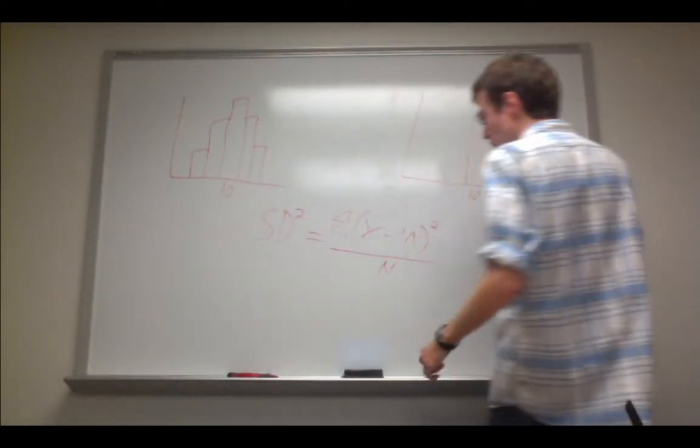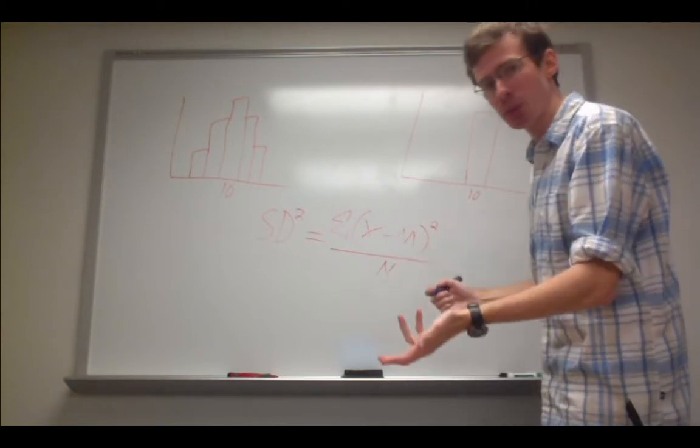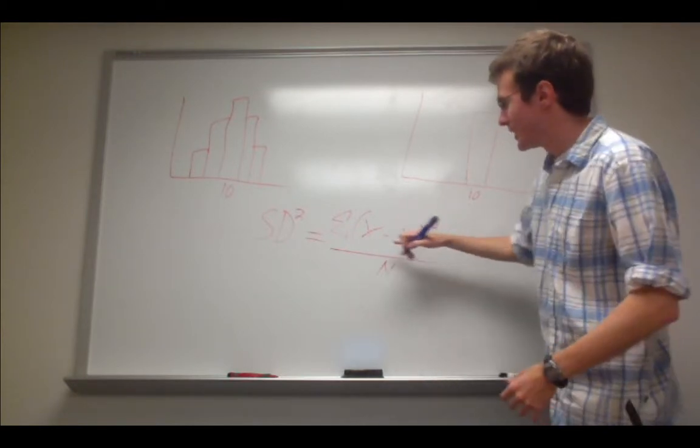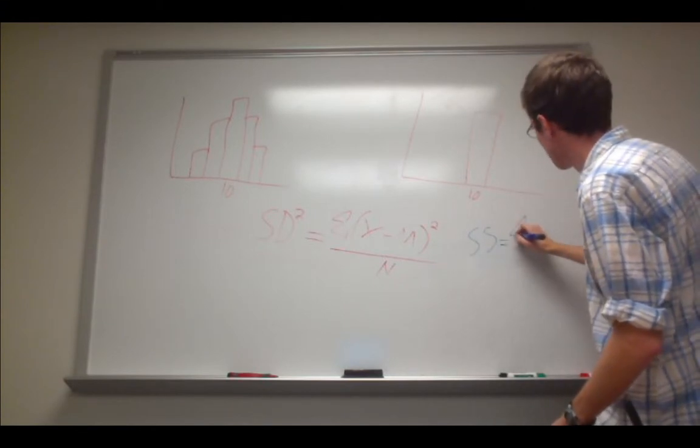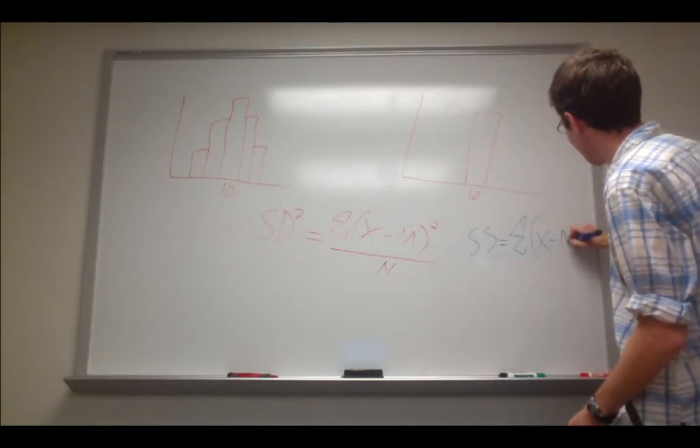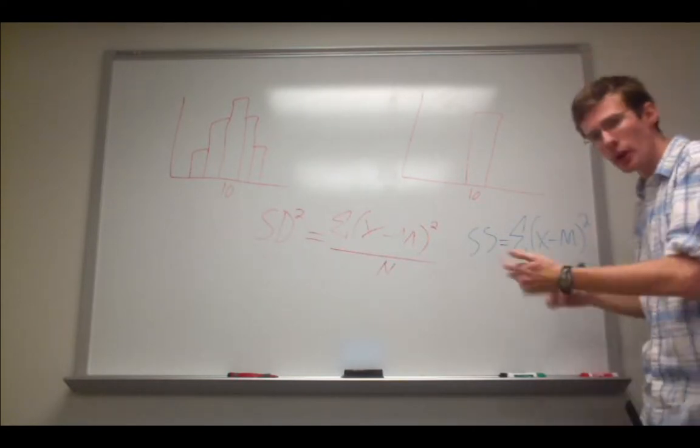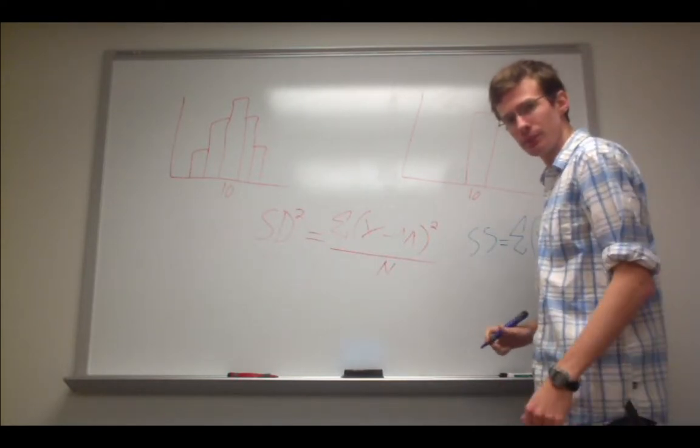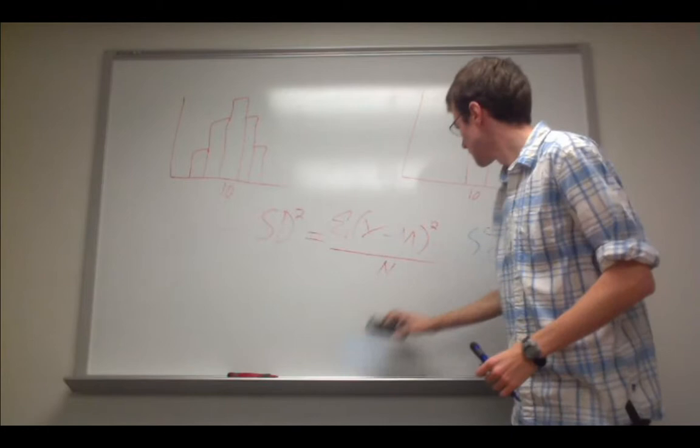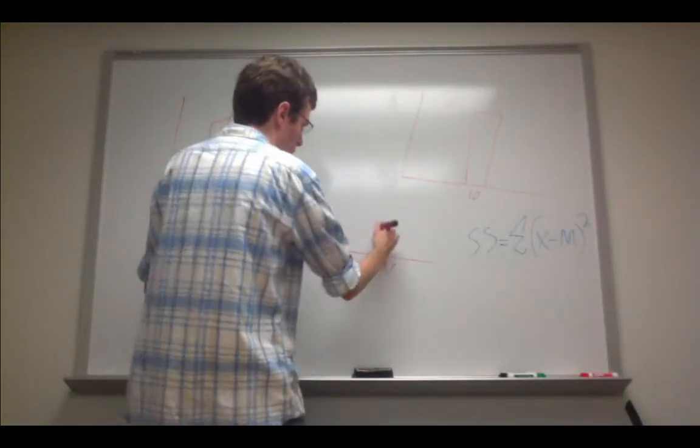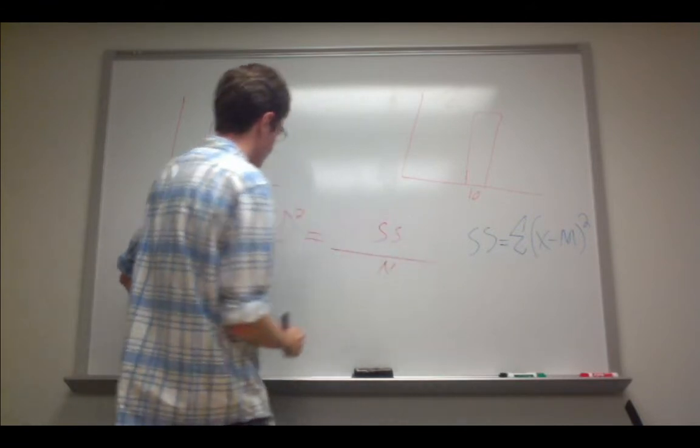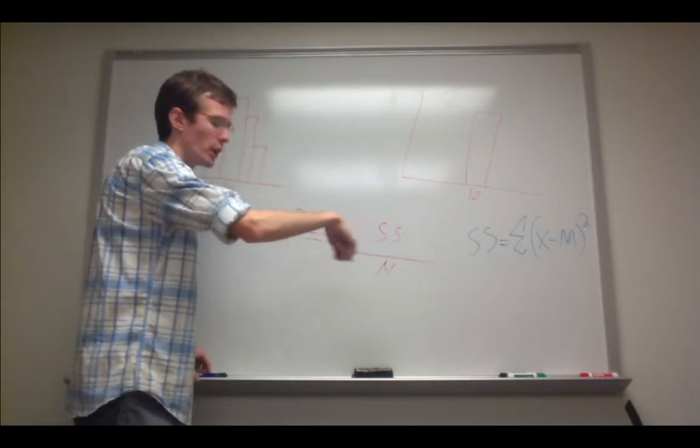You may also see a term called SS, which stands for sum of squares. And that's simply this numerator term. So SS equals sum of x minus m, and squaring each of those differences. So in other words, you could simply plug that back in here, and it would be the same thing. SD squared equals sum of squares over n.